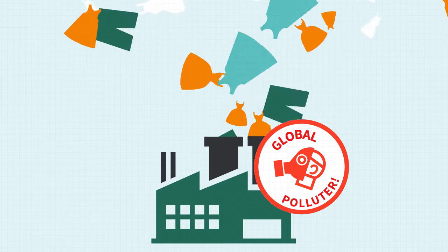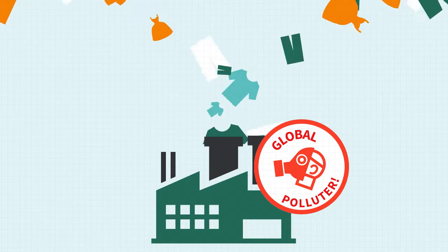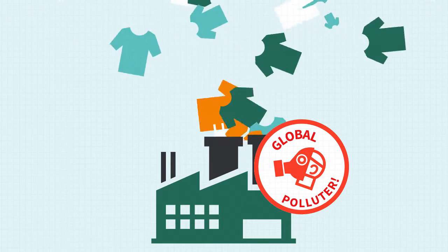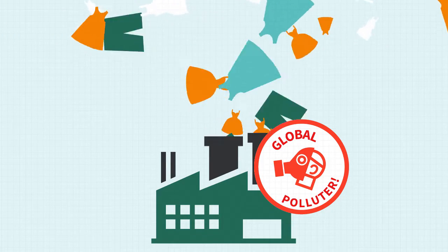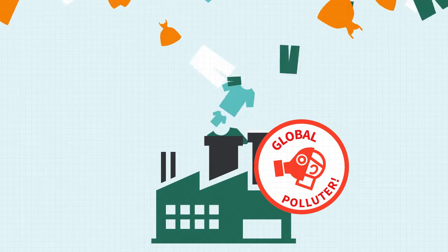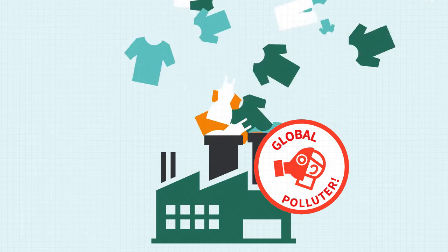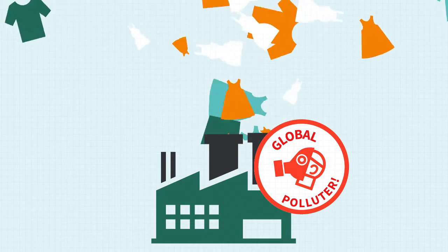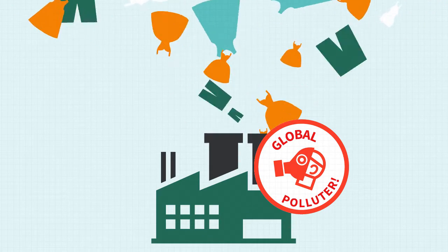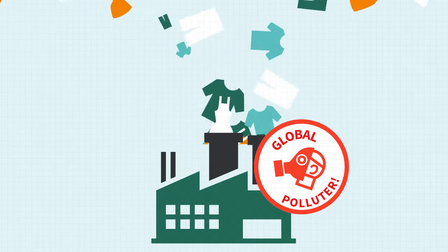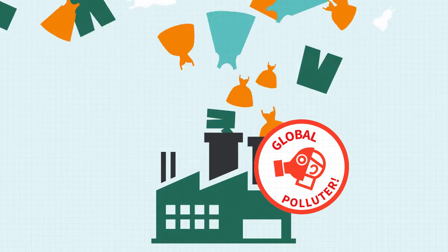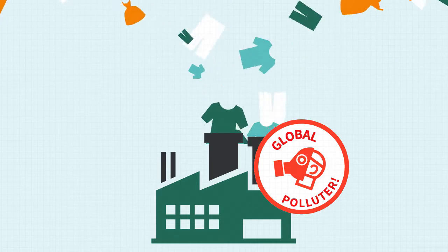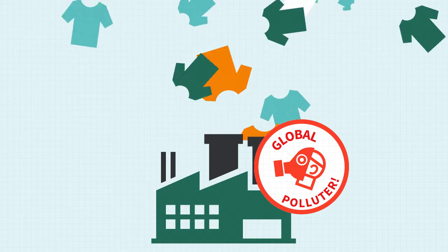Hazardous chemicals are released during the making of clothes. In addition, the clothing industry involves complex chains of production: resourcing raw materials, textile manufacturing, shipping, retail and disposal of the used garments.